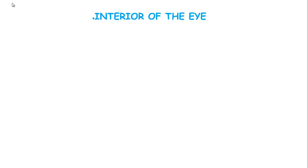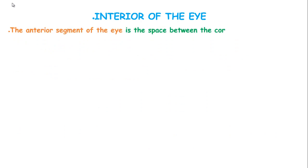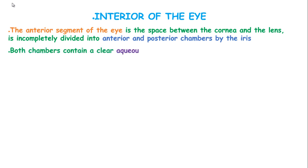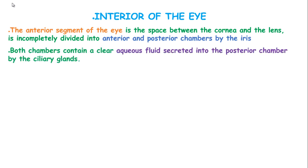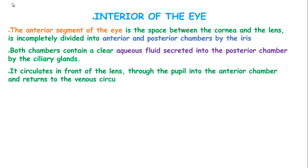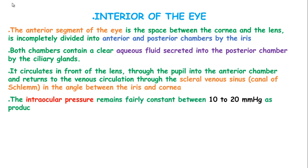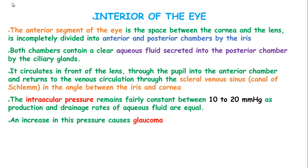The anterior segment of the eye is the space between the cornea and the lens, and is incompletely divided into anterior and posterior chambers by the iris. Both chambers contain clear aqueous fluid, which is secreted into the posterior chamber by the ciliary glands. It circulates in front of the lens, through the pupil, into the anterior chamber and returns to the venous circulation through the sclerovenous sinus — also known as the canal of Schlemm — in the angle between the iris and the cornea. Intraocular pressure remains constant between 10 to 20 mmHg, as production and drainage rates of aqueous fluid are equal. An increase in this pressure causes a condition known as glaucoma.